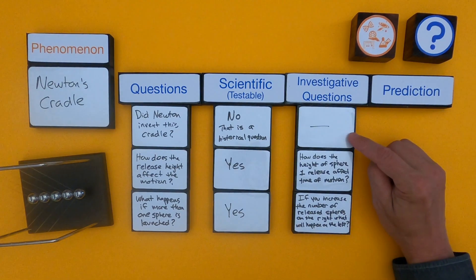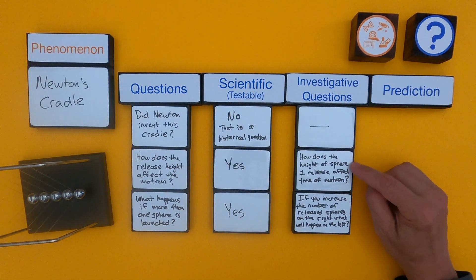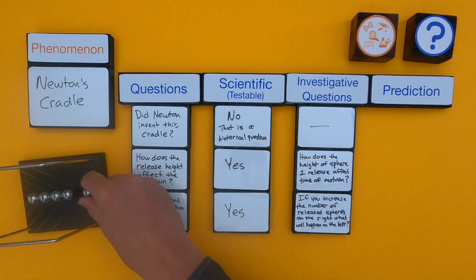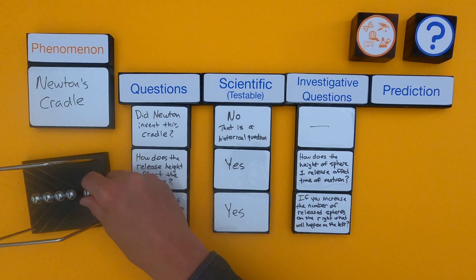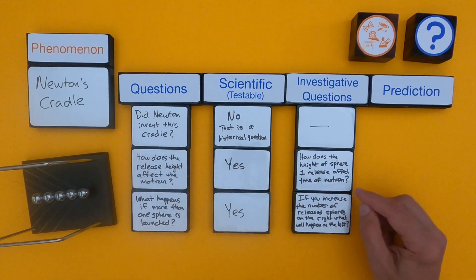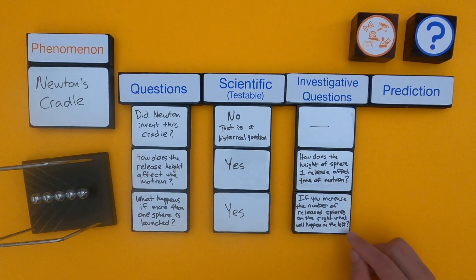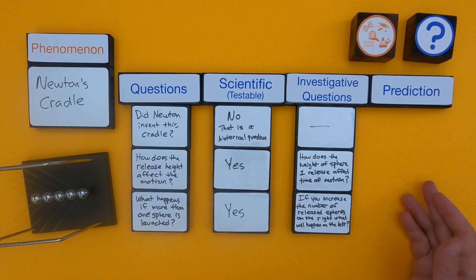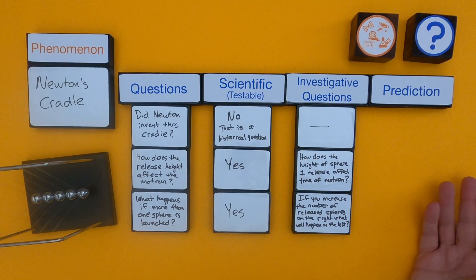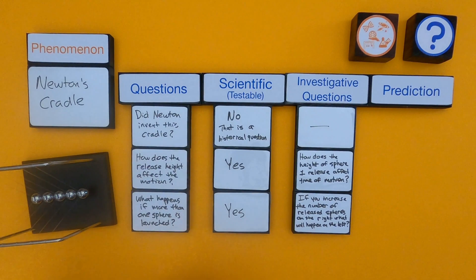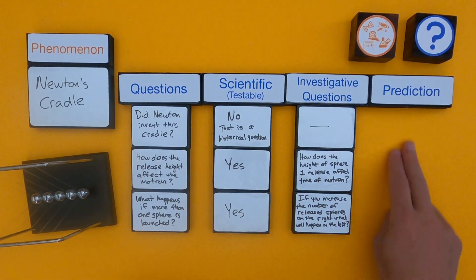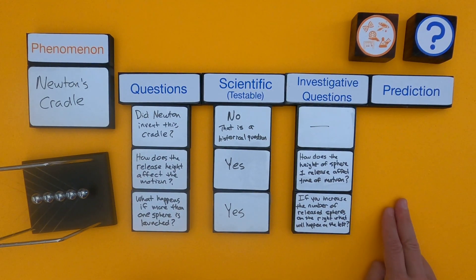For the first question I don't have an investigative question, but for the next one I'm asking: how does the height of sphere one's release — dropping it low or really high — affect the time of motion? Will it go shorter or longer? And for the next one: if you increase the number of released spheres from one to two to three on the right side, what's going to happen on the left side? An important part of science is to make a prediction, since you don't always get to play with the phenomena. So I'm going to write some predictions down.